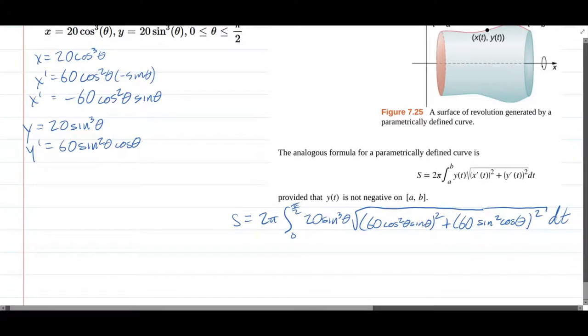Let's go ahead and square these. What's 60 squared? Let's leave it as 60². I think it's 3,600, but we'll leave it like this for now. Cos² squared is cos⁴. Sin² times cos² plus 60² sin⁴ cos².